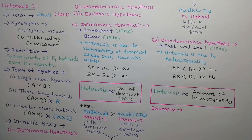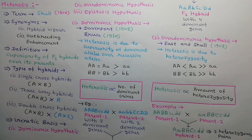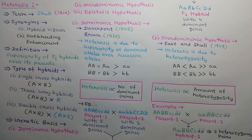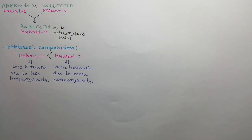We can explain the Over-dominance Hypothesis using two examples. In the first example, parent 1 and parent 2 show similarity in the presence of BB and dd. By crossing parent 1 and parent 2, hybrid 1 is produced which has two heterozygous pairs. In the second example, parent 1 and parent 2 are completely different from each other. Crossing them produces hybrid 2, which has four heterozygous pairs. Comparing hybrid 1 and hybrid 2, hybrid 2 shows more heterosis due to more heterozygosity.